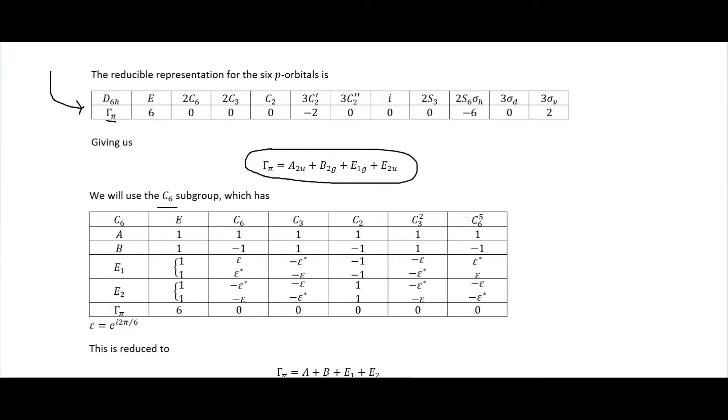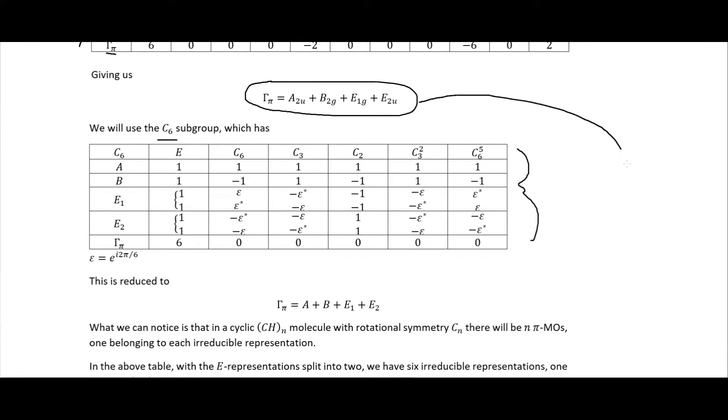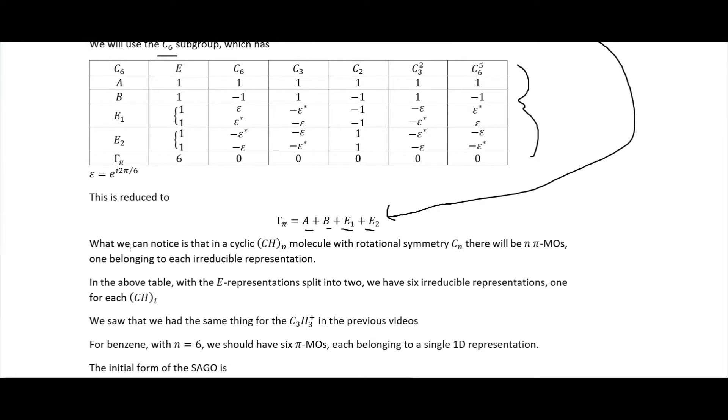And so we will actually use the C6 subgroup which has this right here. And so we actually sort of transform this into this one down here. So instead of the A2u and B2g, E1g and E2u, it's just the A plus B plus E1 plus E2. And so something that we can notice, and we would notice this if we looked at even more examples, is that in a cyclic CHn where it's the same number of C's and H's in it, that the rotational symmetry Cn there will be n pi molecular orbitals, one belonging to each irreducible representation.